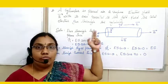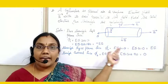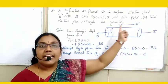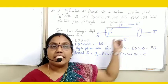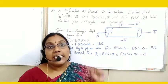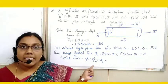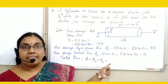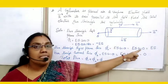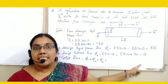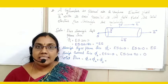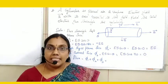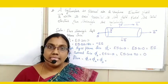Total electric flux is φ₁ + φ₂ + φ₃ — flux through the left face plus flux through the right face plus flux through the curved face. Total = −ES + ES + 0 = 0. So total flux through the cylinder is equal to zero.